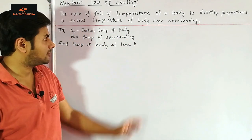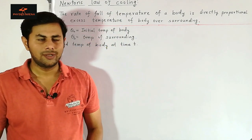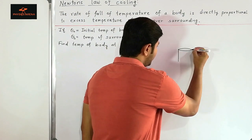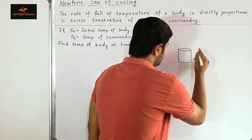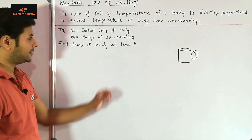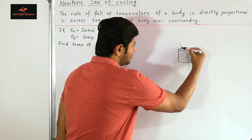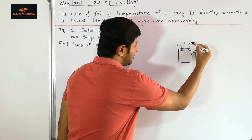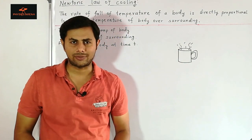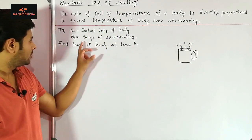The excess temperature is the temperature difference between the body and the surrounding. For an example, suppose we have a cup of tea or coffee, and let's say it has an initial temperature of theta naught. So when T equals zero, the temperature of this cup of tea or coffee is theta naught. And the temperature of the surrounding is theta s.